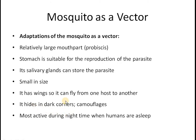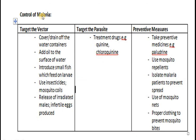Mosquitoes can hide in dark corners, camouflage themselves, and are more active at night when humans are asleep, giving them more chances to bite. Control of malaria includes covering or draining water containers and avoiding stagnation of water so mosquitoes cannot lay eggs. Adding oil to the surface of stagnant water cuts off the oxygen supply, preventing eggs from developing further.